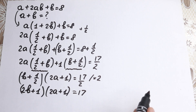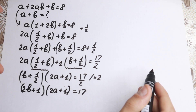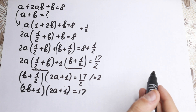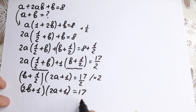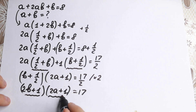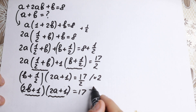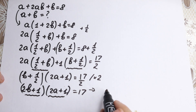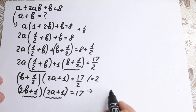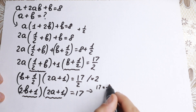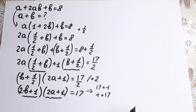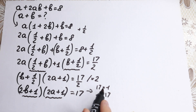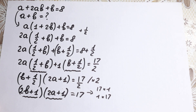This is the final factored form of the problem. So (2b plus 1)(2a plus 1) equal to 17. We have two numbers whose product is 17. Now 17 is a prime number, so there are not many combinations. We have two combinations: 17 times 1 and 1 times 17. And with negative values: minus 17 times minus 1 and minus 1 times minus 17. Let's solve it to find a plus b.